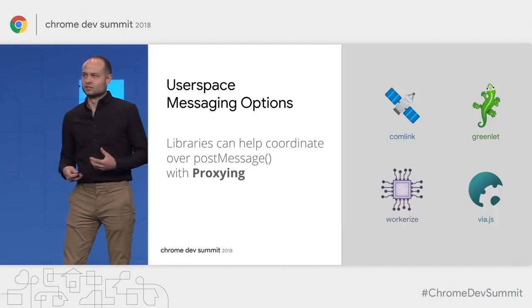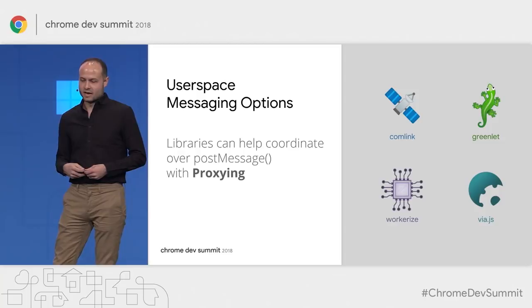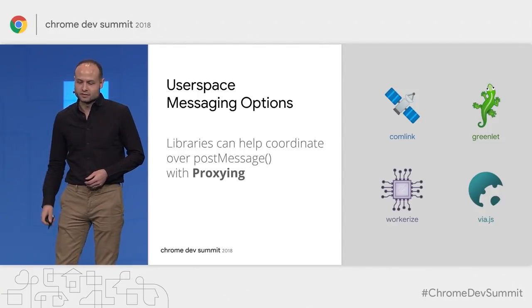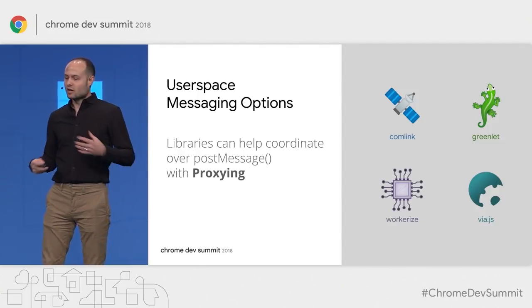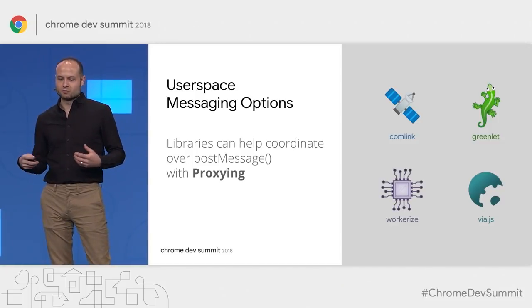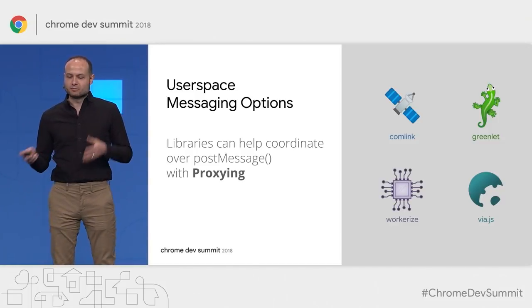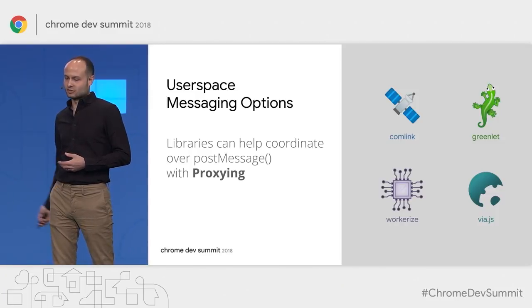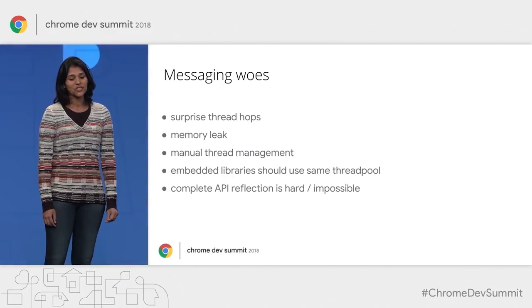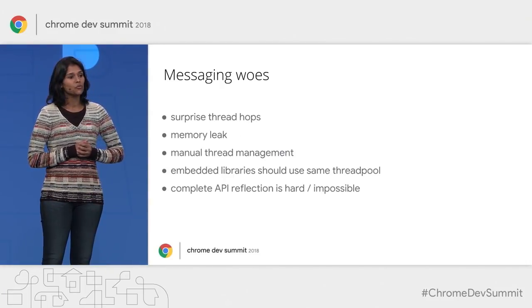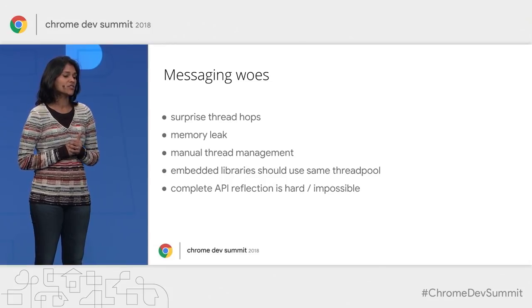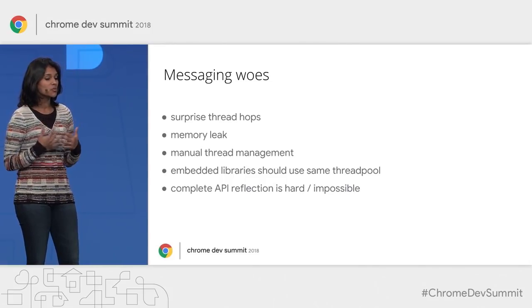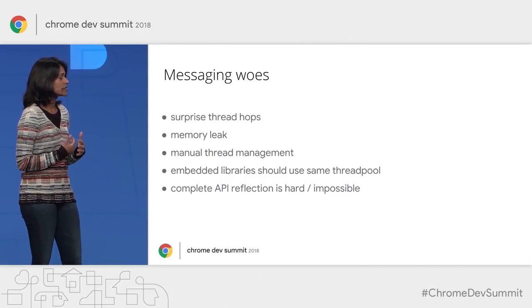We have seen solutions to this in user land through libraries like Comlink, Greenlet, Workerize, and via.js. These all help coordinate messaging across boundaries by abstracting postMessage using something called proxying. Proxying improves over postMessage, but it comes with a number of downsides.